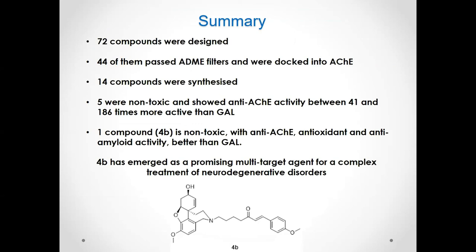In summary, 72 compounds were designed; 44 passed the ADME filters and were docked into the acetylcholinesterase binding site. 14 compounds were synthesized and tested for neurotoxicity; five were non-toxic and were tested for anti-acetylcholinesterase activity, showing 41 to 186 times higher activity than galantamine. The most active and non-toxic compound, 4b, was further investigated in vivo, ex vivo, and in vitro. Results indicate that 4b is comparable to galantamine, is low-toxic, and possesses anti-acetylcholinesterase, antioxidant, and anti-amyloid beta activity. Therefore, 4b has emerged as a promising multi-target agent for complex treatment of neurodegenerative disorders.